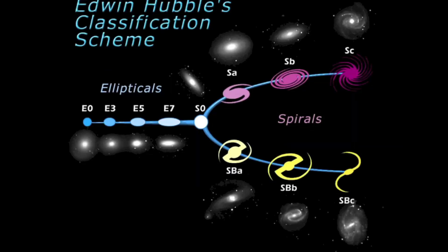In the early 20th century, the American astronomer Edwin Hubble came up with a classification system for galaxies. Today, astronomers call it the tuning fork diagram. Hubble's classification scheme went from rounder ellipticals called E0, with higher E numbers indicating a more squashed appearance. Lenticular galaxies — a weak division between elliptical and spiral — are classified as S0. For spiral galaxies without a bar through the center, Hubble classified them as SA, SB, and SC.